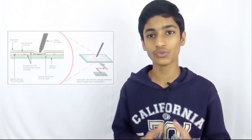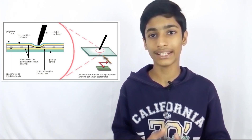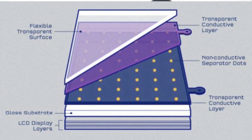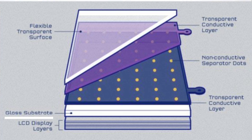A resistive touch screen has two flexible sheets of material that have an electrical resistive coating. A gap separates the two sheets. This is what it looks like. This is the upper layer called flexible transparent surface. This is the transparent conductive layer. And this is the non-conductive separate dots. This is the transparent conductive layer. This is the glass substrate. This is the LCD display layers.